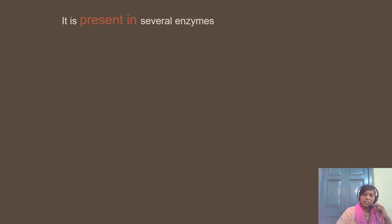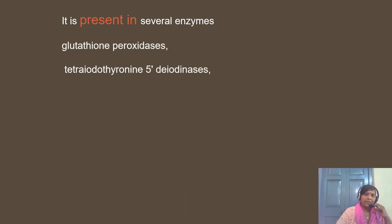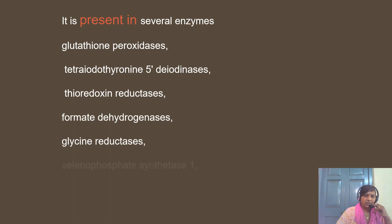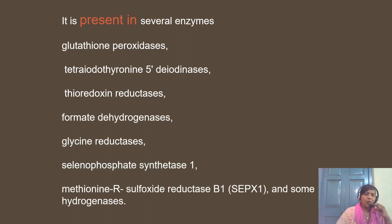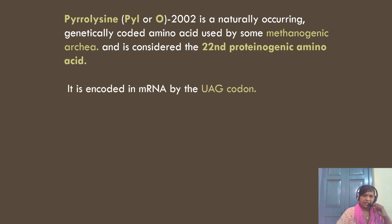Selenocysteine is present in many enzymes such as glutathione peroxidase, tetraiodothyronine deiodinase, thioredoxin reductase, and formate dehydrogenases. The 22nd proteinogenic amino acid is pyrrolysine, discovered in 2002, with three-letter code PYL and single-letter code O. It is found naturally in some methanogenic archaea and is encoded by the UAG codon.